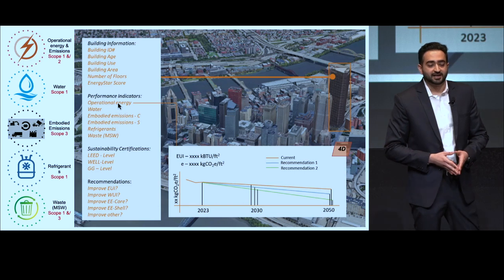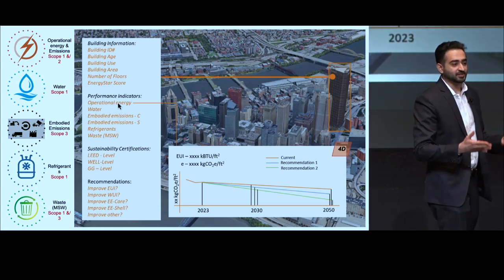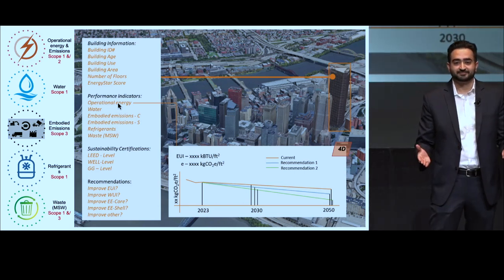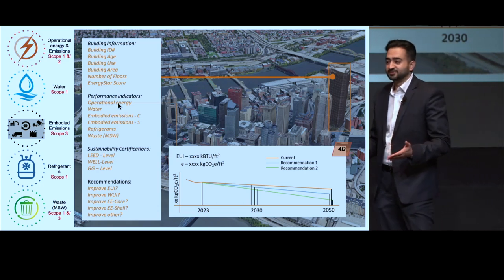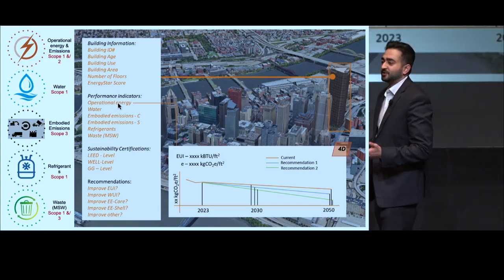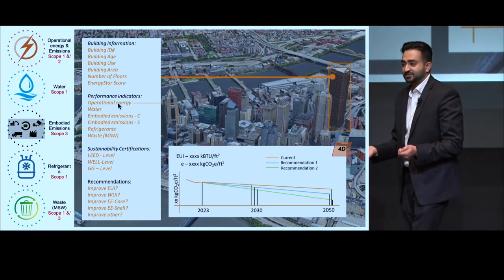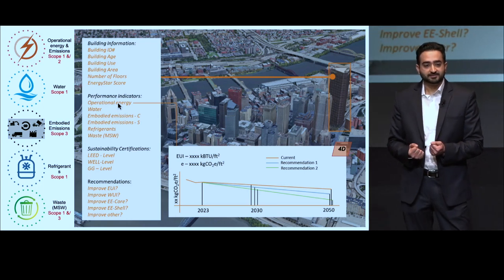Building-related Scope 2 emissions result from purchased energy — for example, emissions resulting from the electricity, gas, or steam that we purchase from utility providers.